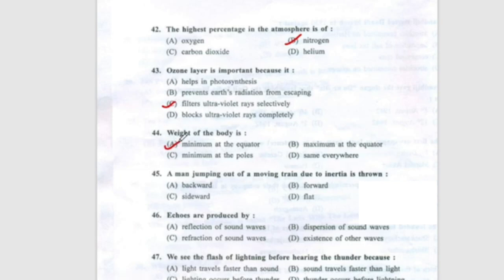Question 42: The highest percentage of gas in the atmosphere is nitrogen, option B. Question 43: The ozone layer is important because it filters ultraviolet rays selectively, option C. Question 44: The weight of a body is minimum at the equator, option A. Question 45: A man jumping out of a moving train due to inertia is thrown forward, option B. Question 46: Echoes are produced by reflection of sound waves, option A.